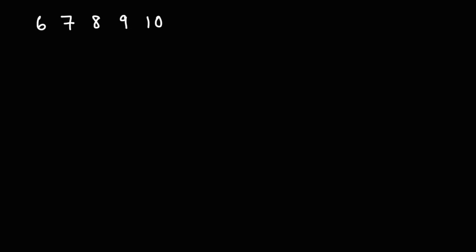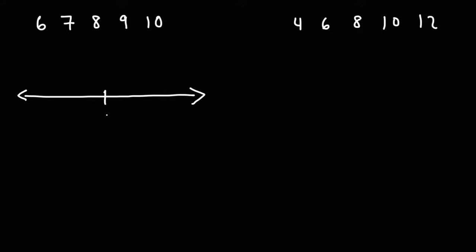Let's use an example to understand this concept. Say we have the numbers 7, 8, 9, 6, and 10 — we'll call that data set 1. And for data set 2, let's say we have the numbers 4, 6, 8, 10, and 12. So which data set would you say has a higher variance — data set 1 on the left or data set 2 on the right? If we were to plot this on a number line, data set 1 would look like this, centered at 8. If we do the same thing for data set 2, it's centered at 8 as well.